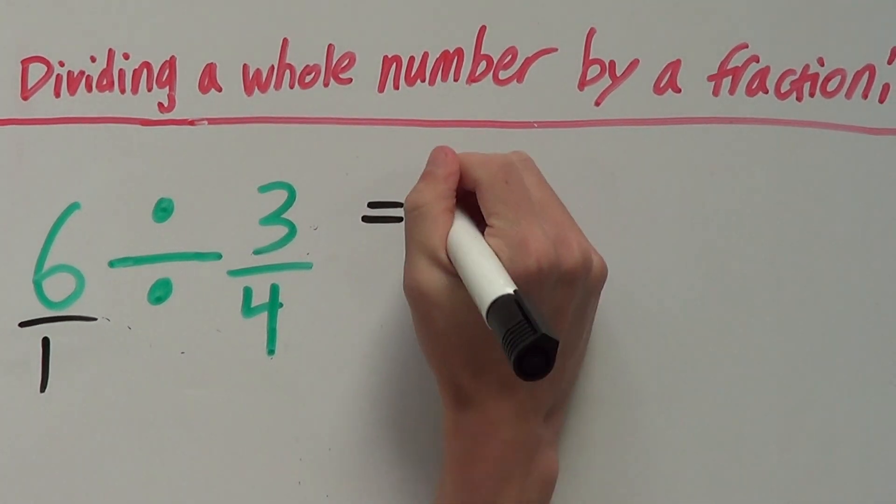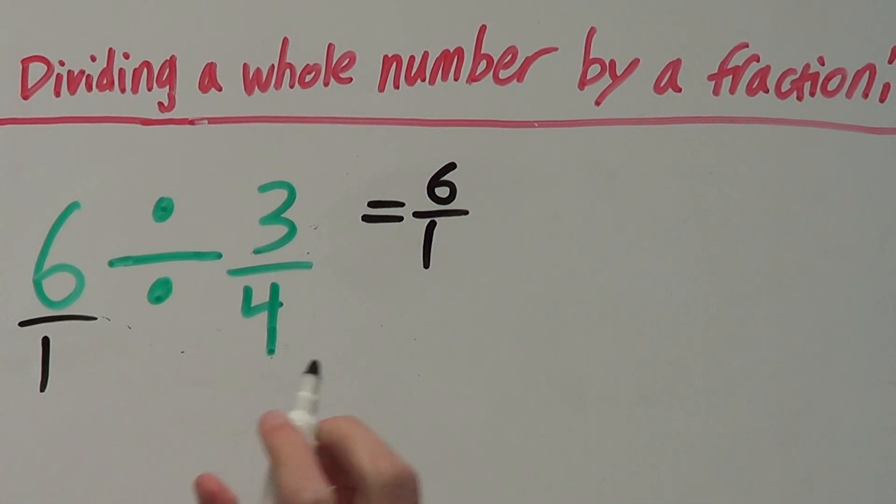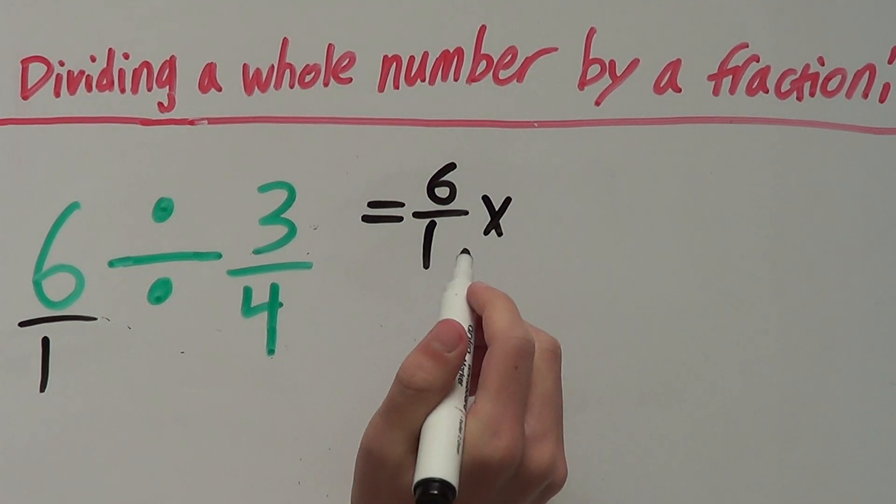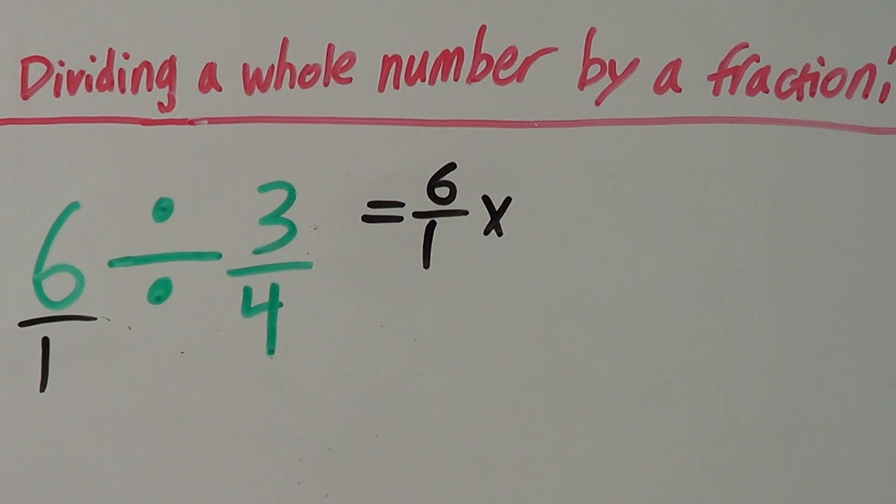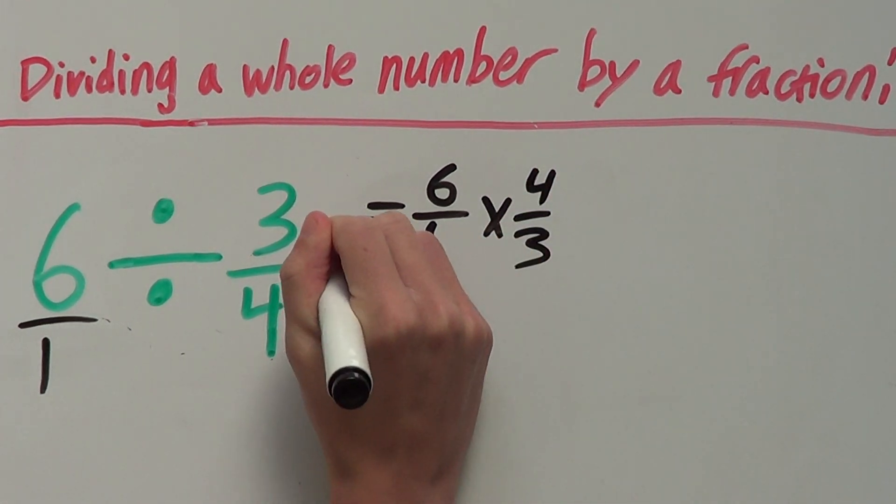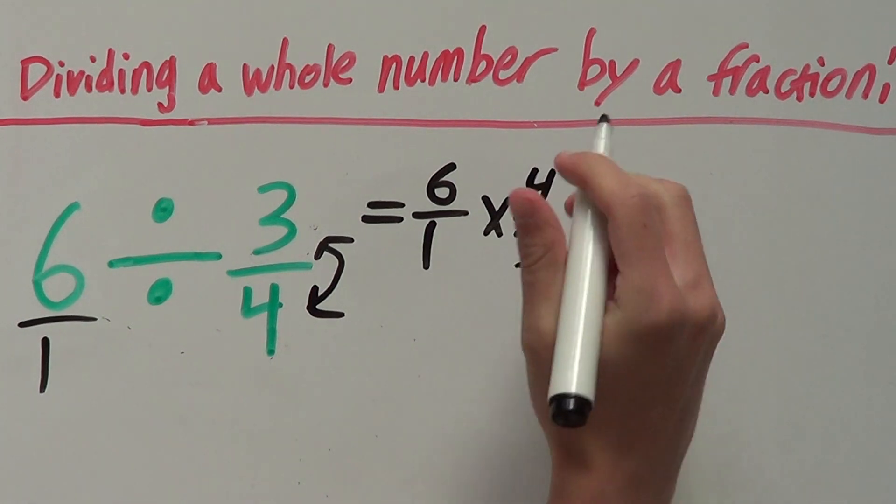So, the first step is to write or rewrite the problem. So, 6 over 1 and we change the sign to a multiplication sign instead of a division. And then we rewrite this fraction here as its reciprocal which just means its flipped version. So, instead of 3 over 4, we write 4 over 3.